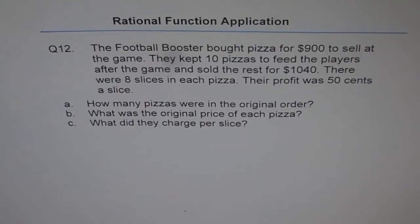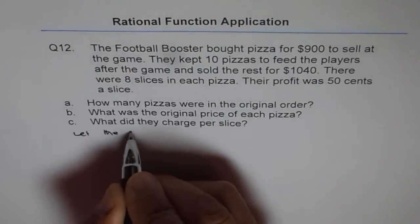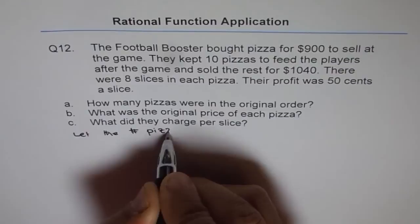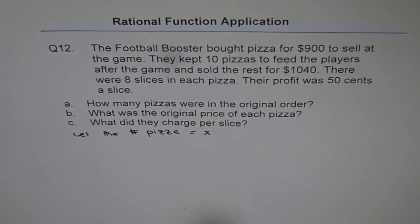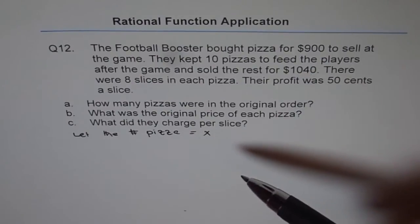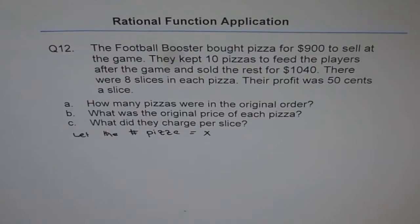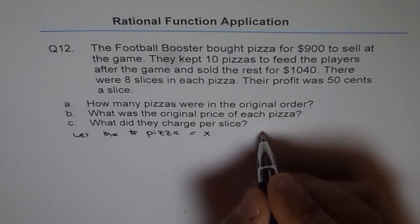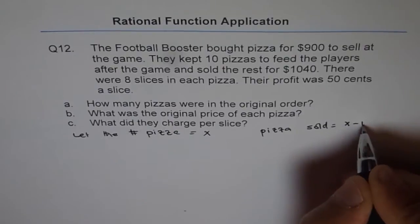A football booster bought pizza for $900 to sell at the game. So let's say the number of pizzas bought is X. Let the number of pizzas bought equal X. Now, the cost price is $900 over X, and the selling price is $1040 over how many were sold. They kept 10 pizzas to feed the players and the rest were sold, so pizzas sold is X minus 10.